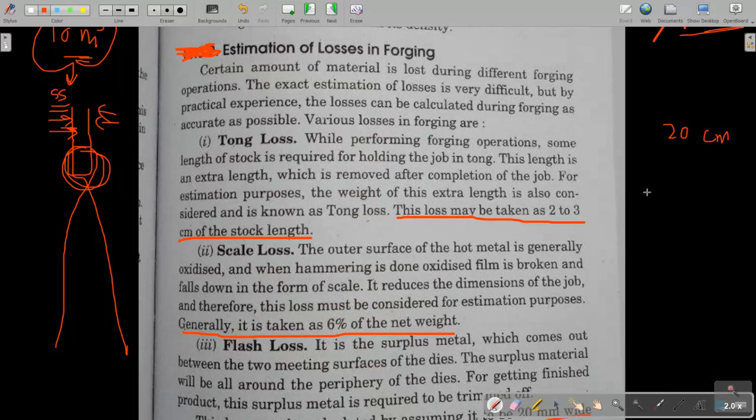Here I have already marked 2 to 3 centimeter of stroke length. Means for example if the length of workpiece for finished component is 20 centimeter, so add 2 to 3 centimeter additionally. For example here 20 centimeter, so we will generate 23 centimeter or 22 centimeter. So total length will be 23 centimeter.